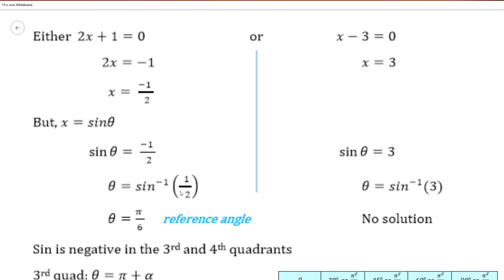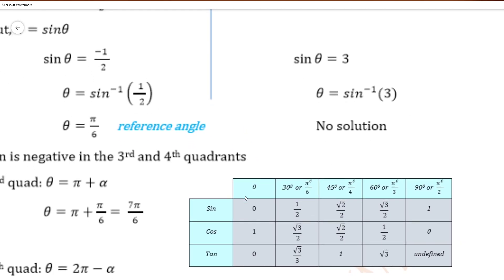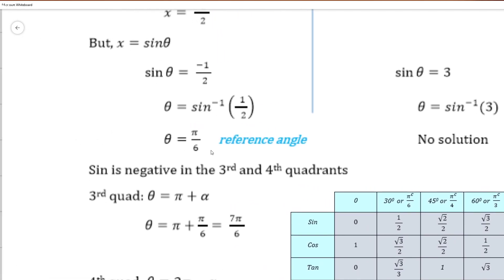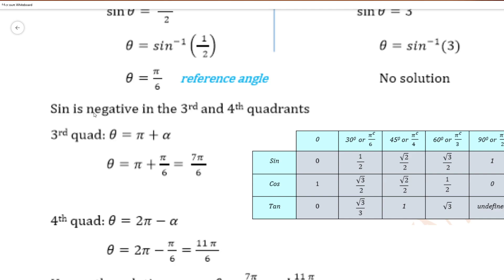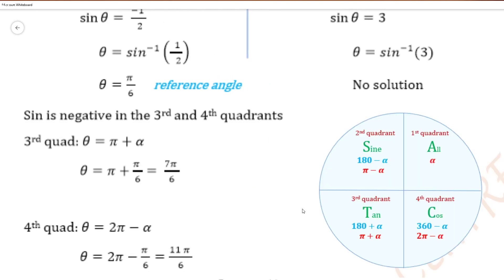Since the value is negative, we take the inverse of the positive value to find our reference angle, which we will use to find theta in the quadrants where sine is negative. We find theta equals sine inverse of 1 half. Looking at the table, sine inverse of 1 half is pi over 6, so pi over 6 is our reference angle. Sine is negative in the third and fourth quadrants. In the third quadrant, theta is pi plus alpha, so theta equals pi plus pi over 6, which is 7 pi over 6.